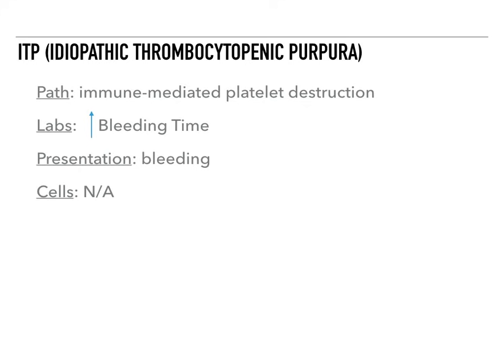ITP stands for idiopathic thrombocytopenic purpura. The pathology here is that it's an immune-mediated platelet destruction. On labs, you see an increased bleeding time. Whenever you see an increased bleeding time, it's because platelets are being destroyed. The patient presents with bleeding from mucosal sites, like their gums.